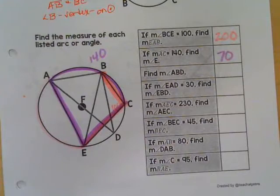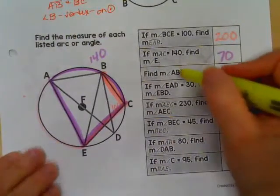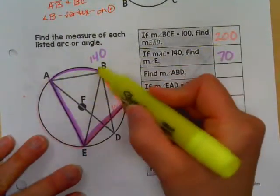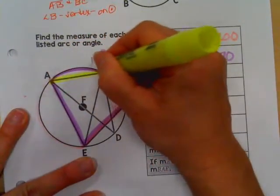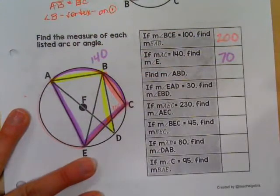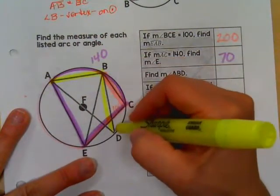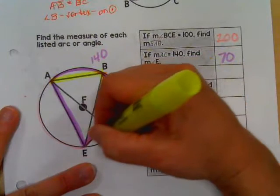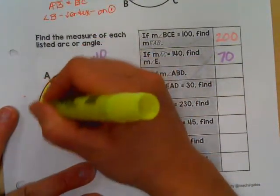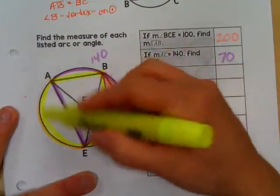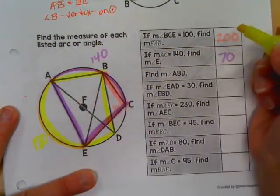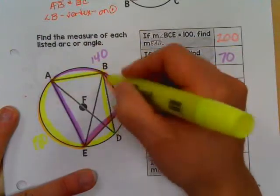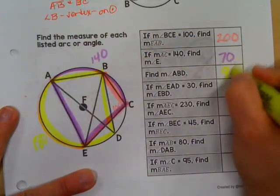Find the measure of angle ABD. Notice, they're not giving us any information except asking us to find this angle. But if you think about it, this angle intercepts this arc. And arc AED is a semicircle, and we know semicircles are 180. So if that's 180, that means this angle has to be half of that, or 90.